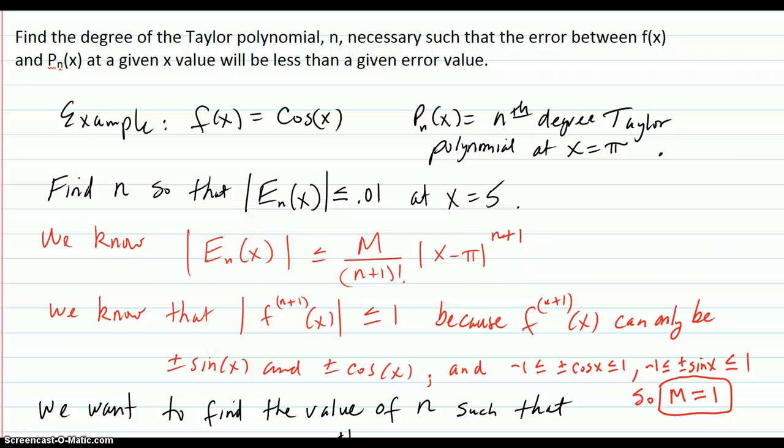Find the degree of the Taylor polynomial, n, necessary such that the error between f of x and the nth degree Taylor polynomial at a given x value will be less than a given error value.